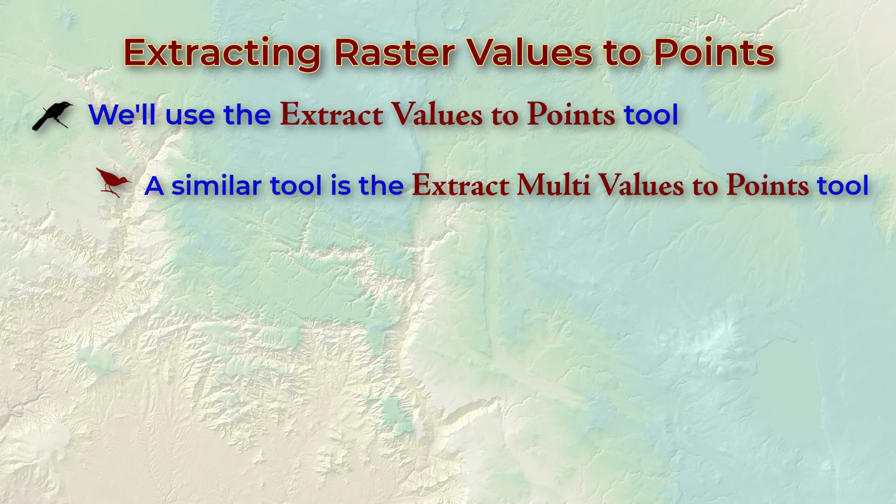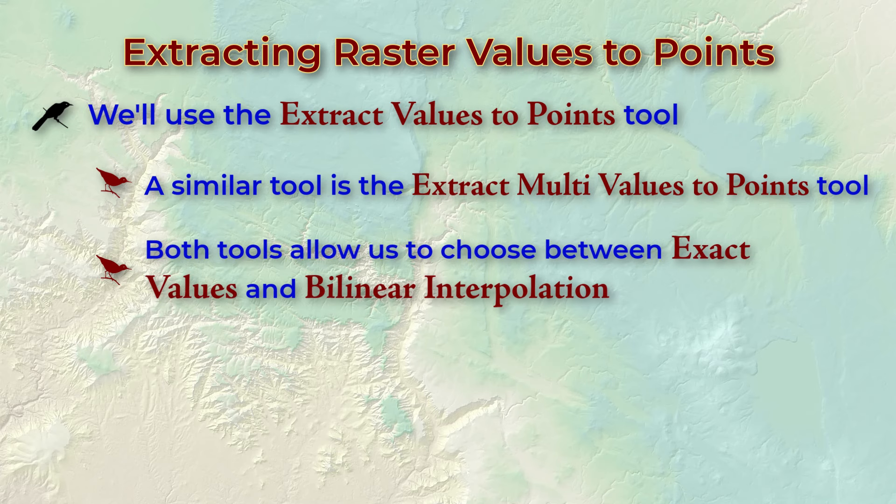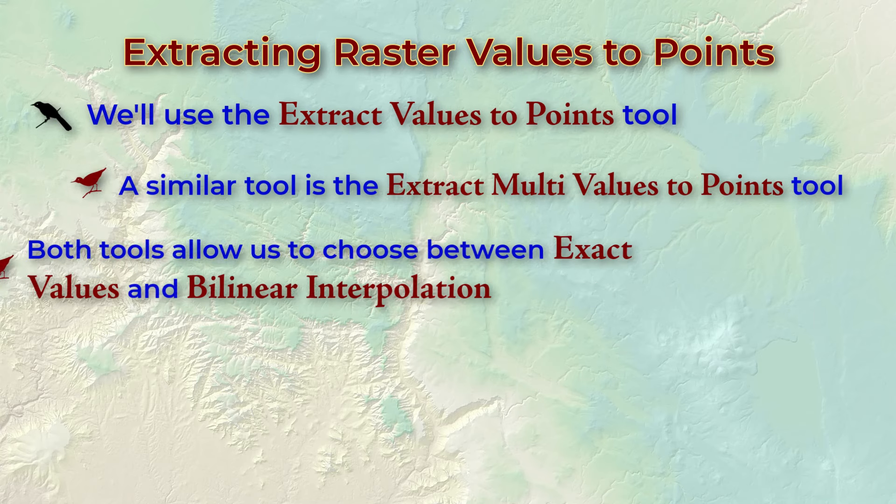Now we mentioned this tool in our first lecture video in this module. We showed how it could give us both exact cell values at point locations or weighted values based on the closest cells to each point. The option for weighted values uses a method called bilinear interpolation, and the option for bilinear interpolation is really cool. The way it works is interesting.